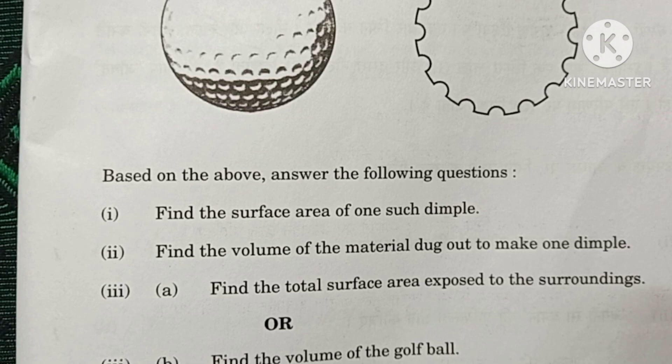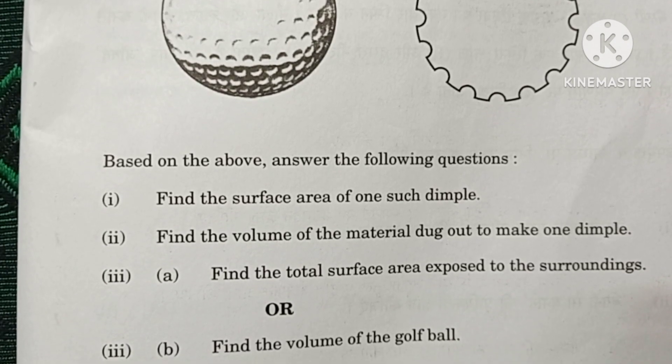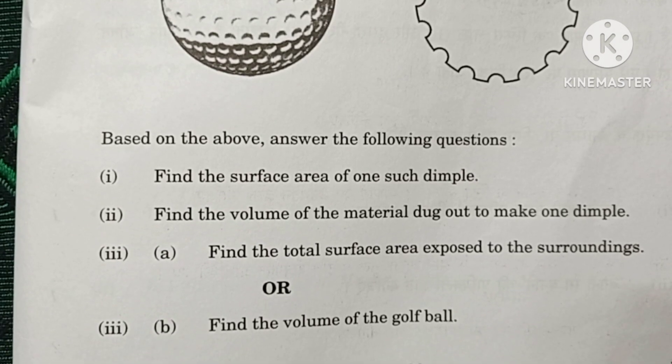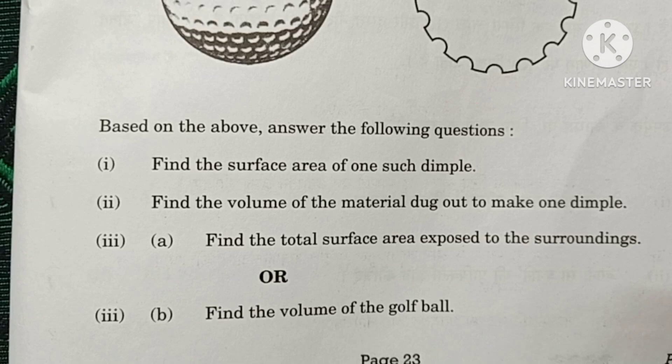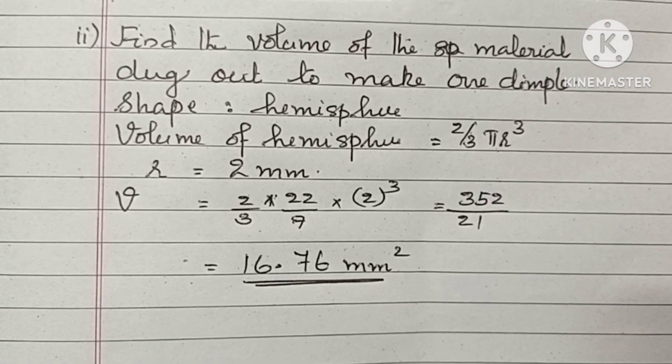The second question is, find the volume of the material dug out to make one dimple. From the figure, we have to find the volume of one dimple. The dimple is also in the shape of the hemisphere. The volume of the hemisphere is equal to 2/3 πr³. Substituting the value of r, the radius of one dimple, it is 2 mm. Therefore, the volume is 2/3 into 22/7 into 2³. The final answer is 16.76 mm³.